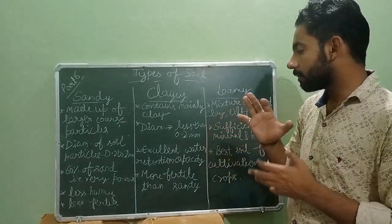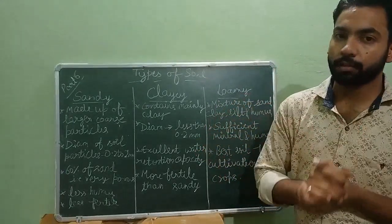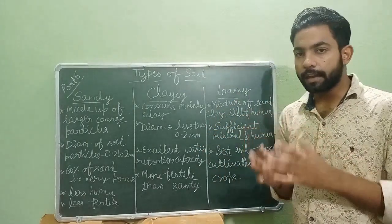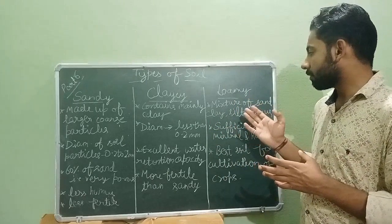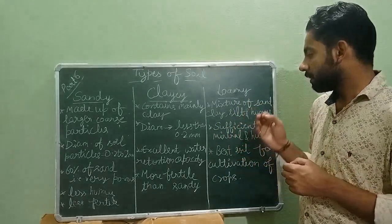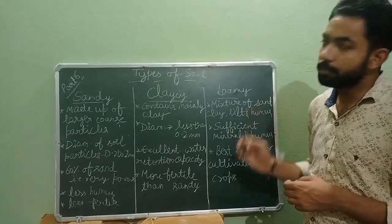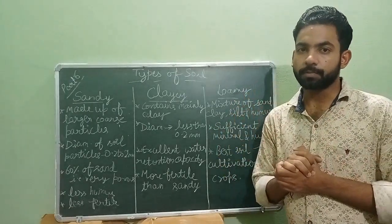Loamy soil is a mixture of silt, clay, sand, and humus. It has sufficient minerals and humus. Loamy soil is the best soil for the cultivation of crops.